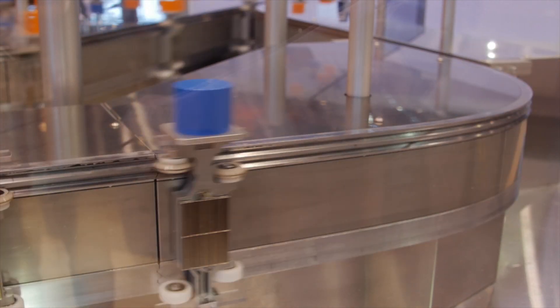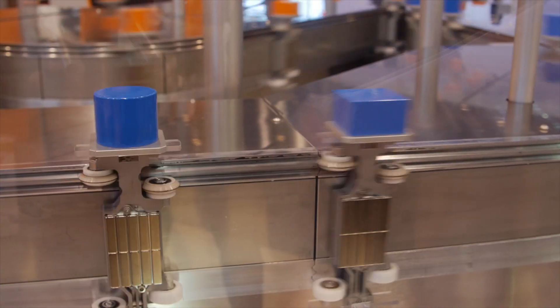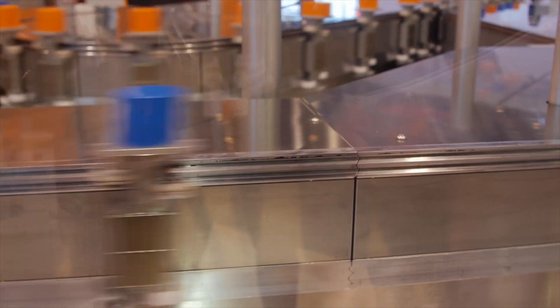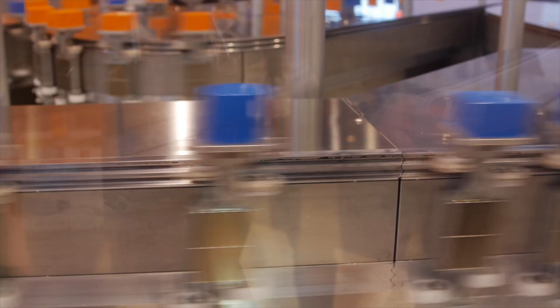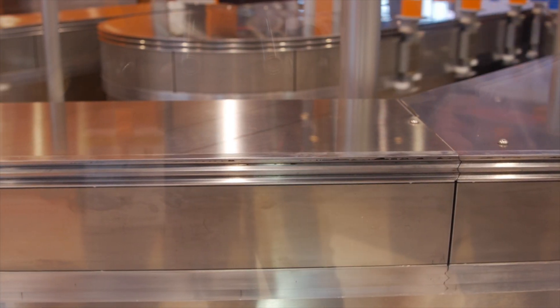Mass customization, batch size one, making exactly what the digital consumer wants, delivering it when they want it, and keeping them coming back for more. That's what the adaptive machine is all about, delivering the next generation of manufacturing flexibility to enable your digital business model.